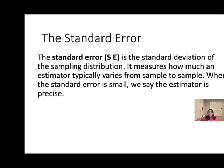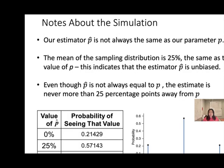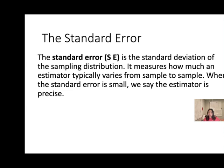Standard error — the standard deviation of the sampling distribution. We may have a standard error just like this. The population proportion is 25% but the sample proportion is only 0%, so we do have a standard error here. It measures how much an estimator typically varies from sample to sample. When the standard error is small, we say the estimator is precise.